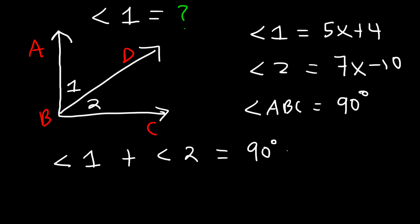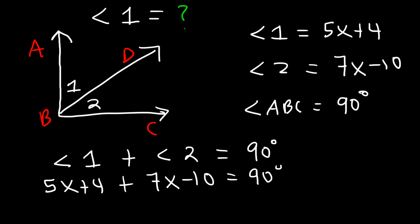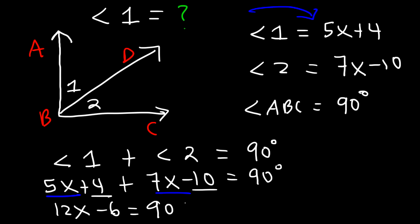Supplementary angles add up to 180. Now we replace angle 1 with 5x plus 4 and angle 2 with 7x minus 10. If we find the value of x, we can find angle 1. Let's combine like terms: 5x plus 7x is 12x, and 4 minus 10 is negative 6. So 12x minus 6 equals 90.